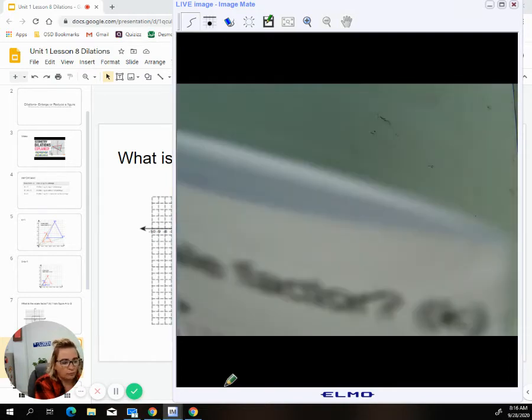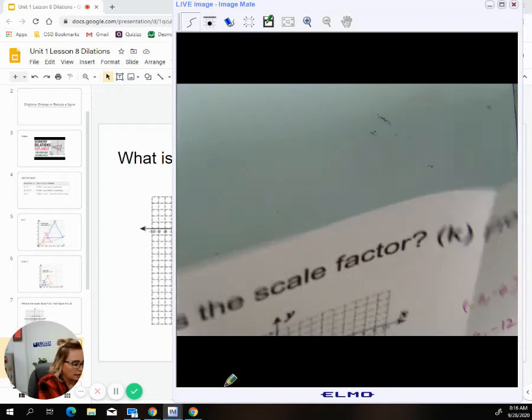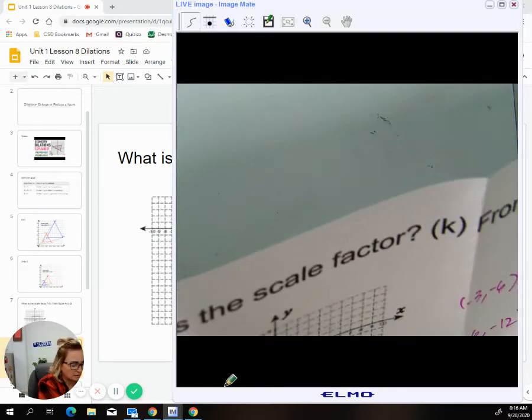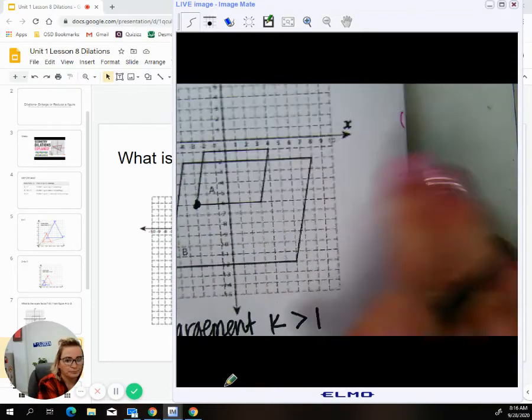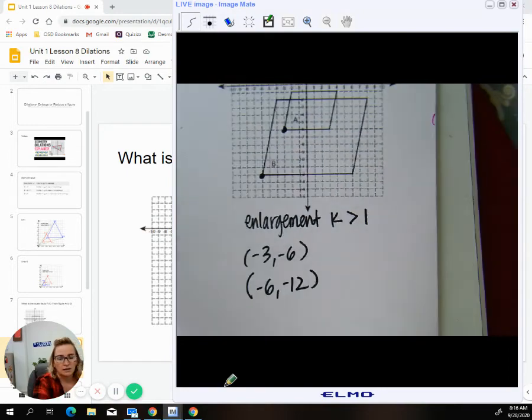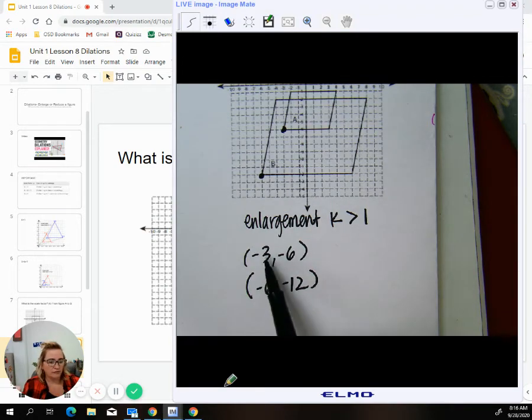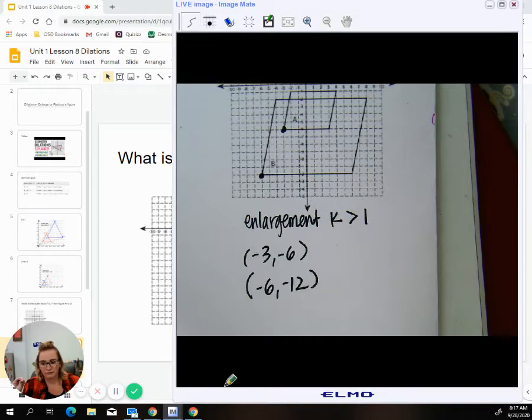So if we are going to look at those, it tells us that our points are negative three, negative six, and negative six, negative twelve. So negative three, negative six, negative six, negative twelve. And remember, we're going larger. So we're saying, how did we get from three to six or six to twelve? And remember, it has to be the same factor that's making it bigger. It can't be different for the X and the Y.